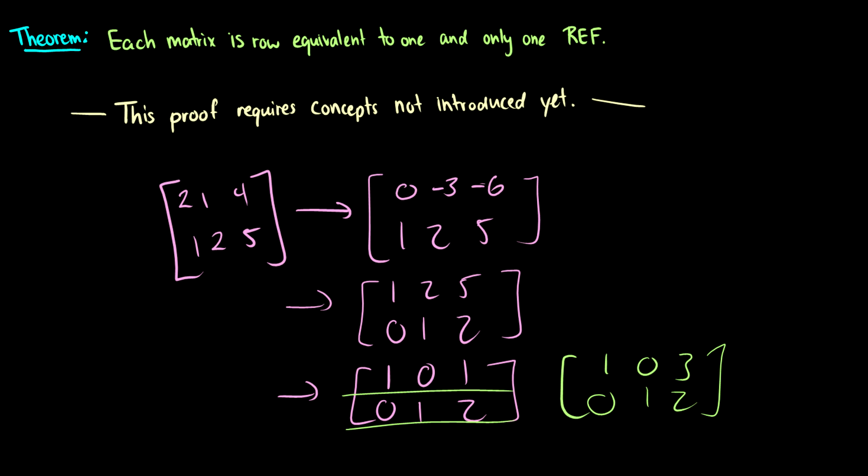So there can only be one reduced echelon form of a given matrix, otherwise we'd be saying that there's two different solution sets. The way we have it set up with these rules of where the leading entries must be, we can be more specific when we say there's only one reduced echelon form. This is the proper way to show it. If there were more than one, then there would be different solution sets for the same system of equations, and we know that's not possible.